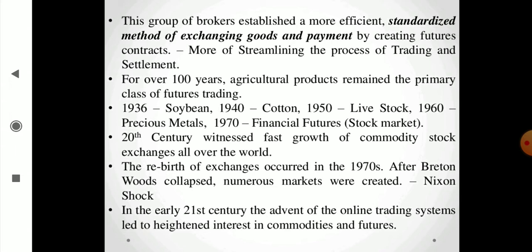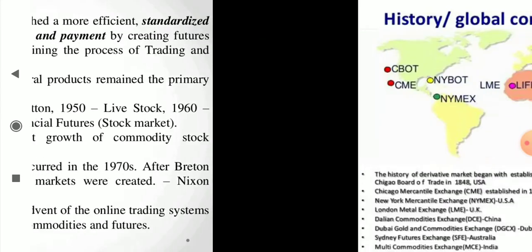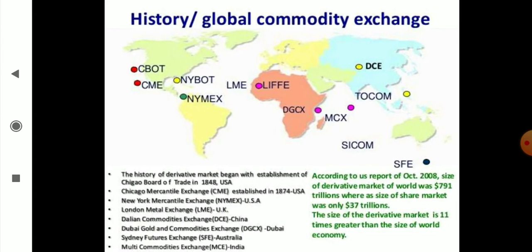The 20th century witnessed fast growth of the commodity market. After the Bretton Woods collapse in the 1970s, new markets were created. In the early 21st century, the advent of online trading systems heightened interest in commodities. The history of the derivative market began with the establishment of the Chicago Board of Trade — CBOT — which we call the mother of all commodity exchanges. Then we have the Chicago Mercantile Exchange and the New York Mercantile Exchange — NYMEX.